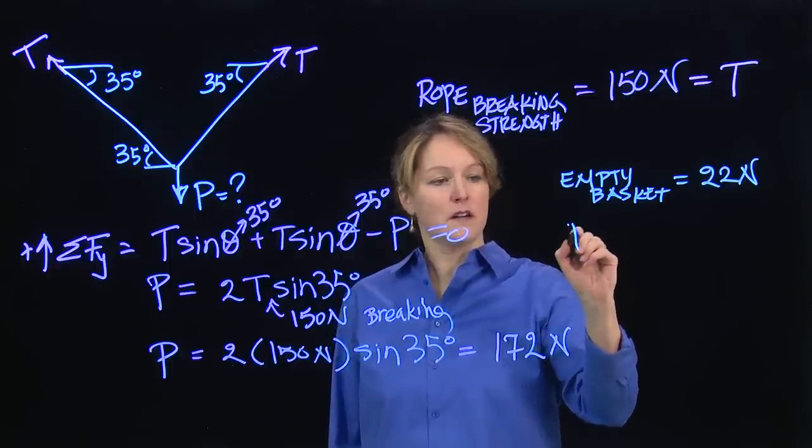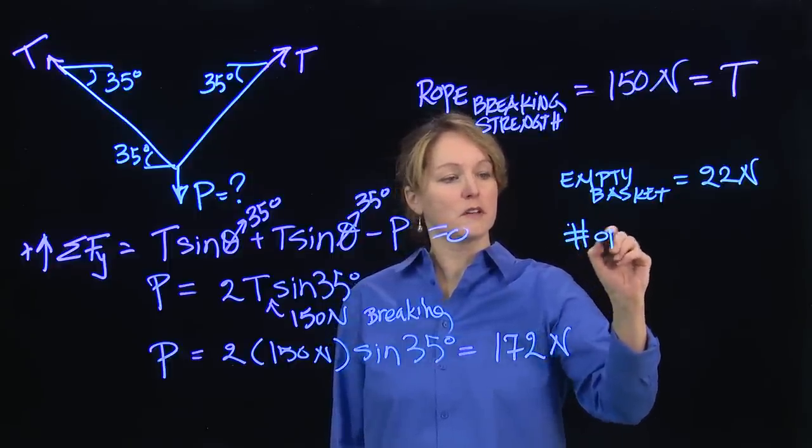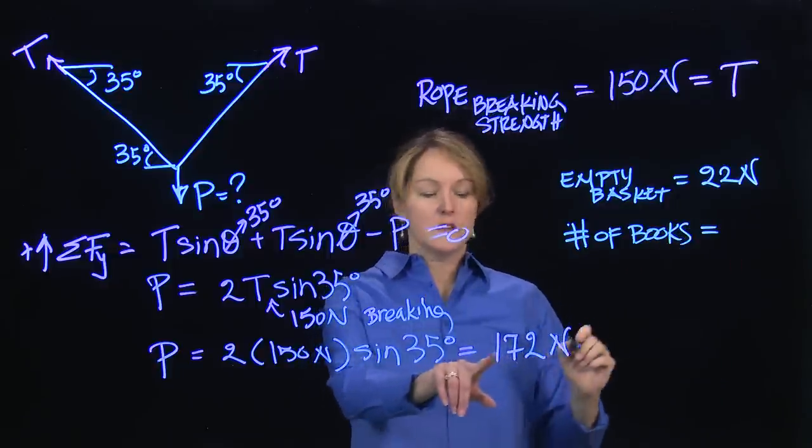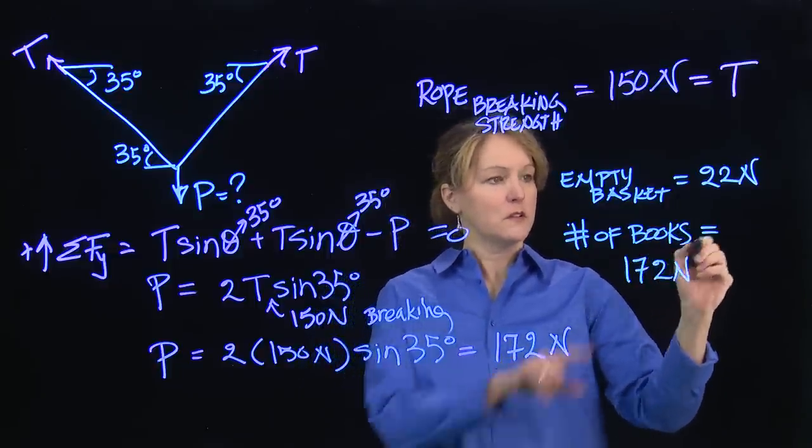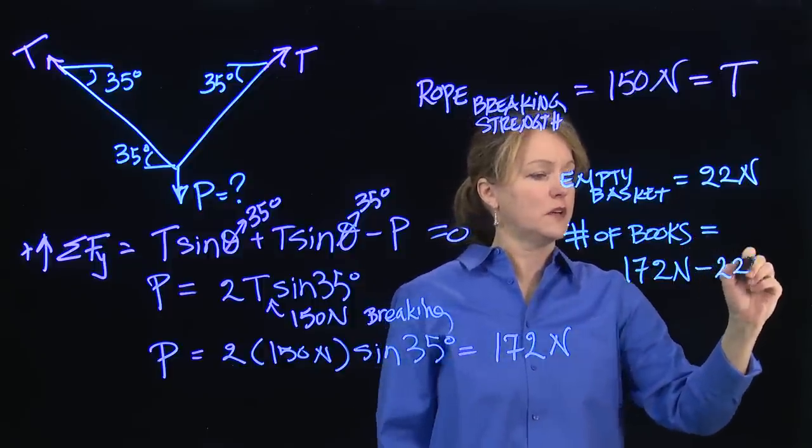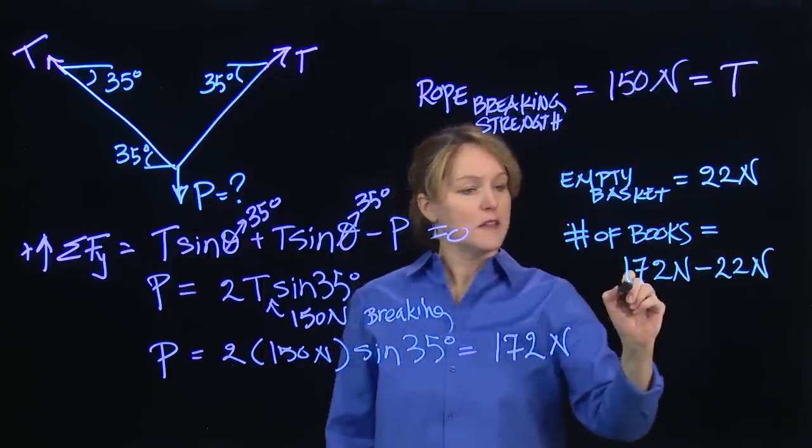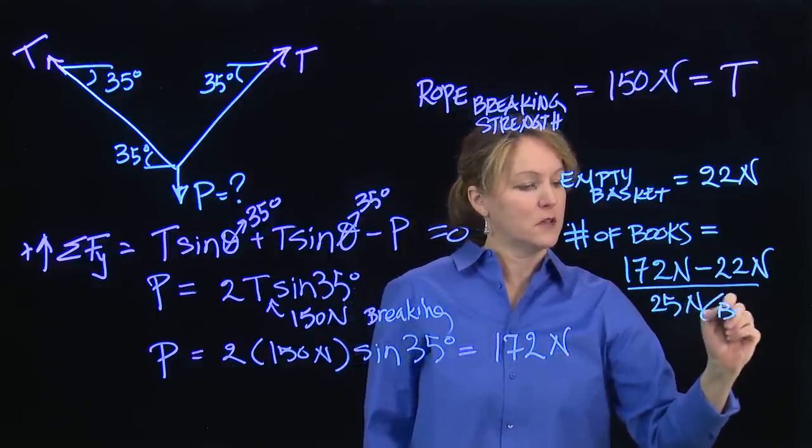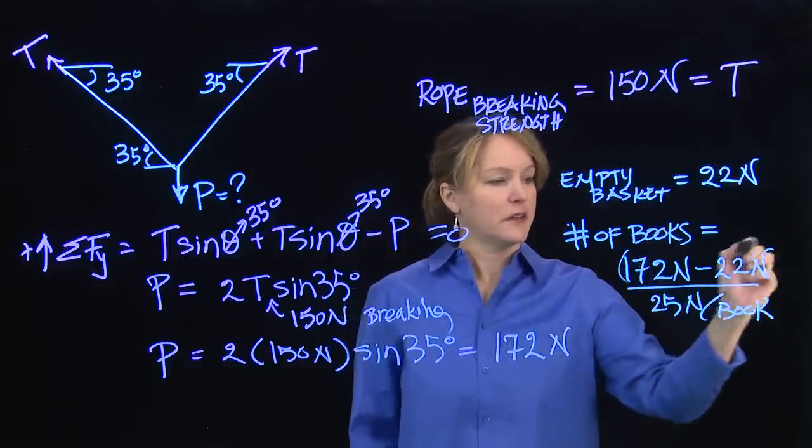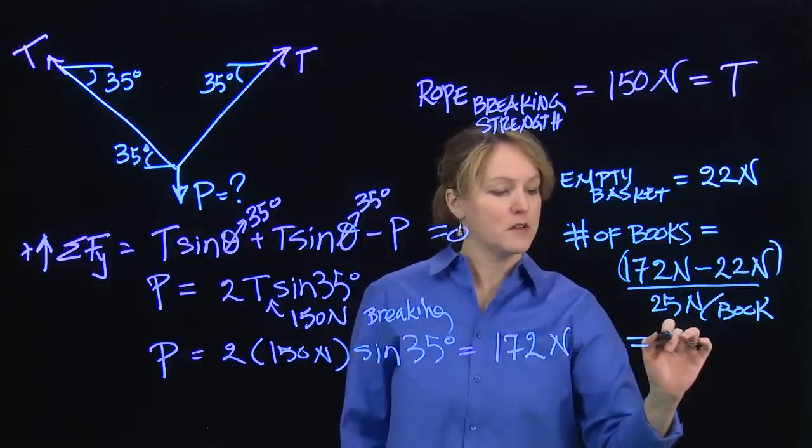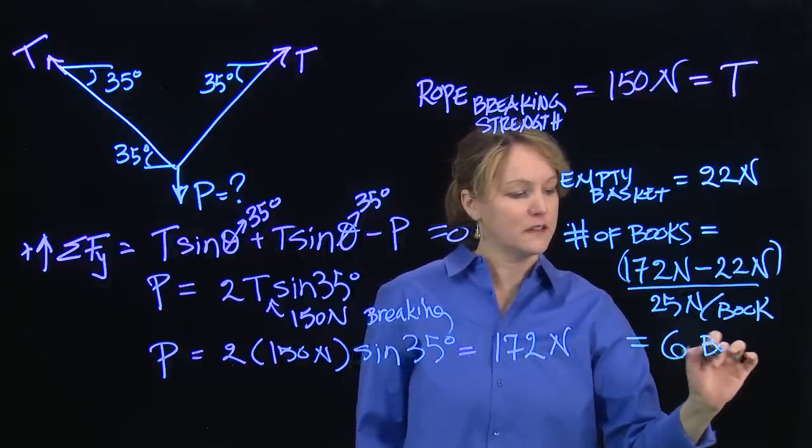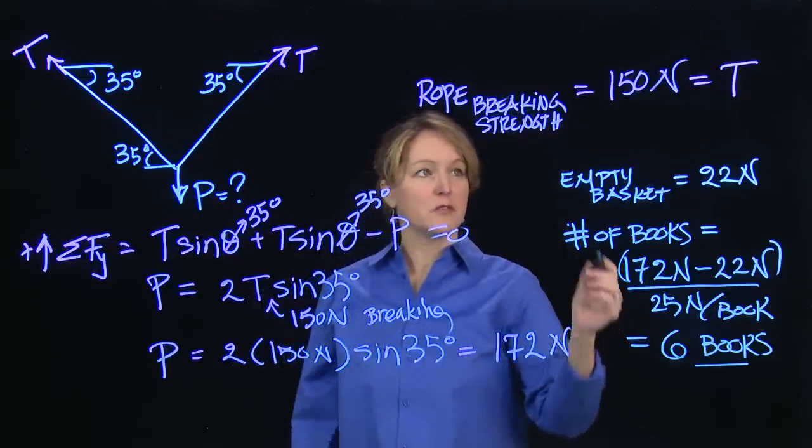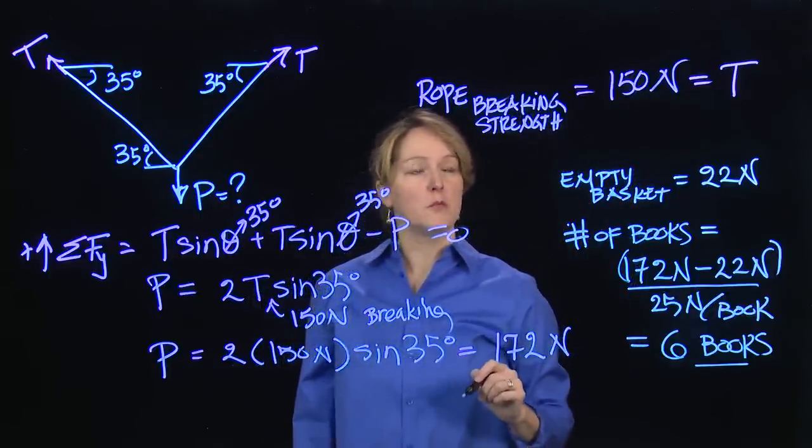So then I can solve for what I'm looking for, which is the number of books. 22 Newtons. And that's going to be the load that I can carry, which is 172 minus the empty basket, 22 Newtons. And then I know that each book weighs 25 Newtons per book. And so I can solve this equation and know the number of books is six. Six books. So Owl can put six books in his basket before we're worried about the rope breaking.